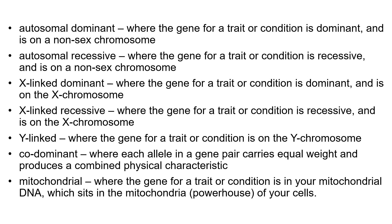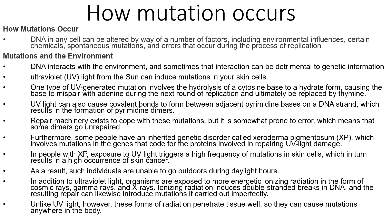How do mutations occur? DNA in any cell can be altered by environmental influences, chemical agents, spontaneous mutations, or errors in the replication process. One example is ultraviolet light from the sun, which can cause mutations in skin cells. One type of UV-generated mutation involves the hydrolysis of a cytosine base to a hydrated form, causing the base to mispair with adenine during the next round of replication and ultimately being replaced by thymine. UV light can also cause covalent bonds to form between adjacent pyrimidine bases, resulting in the formation of pyrimidine dimers.